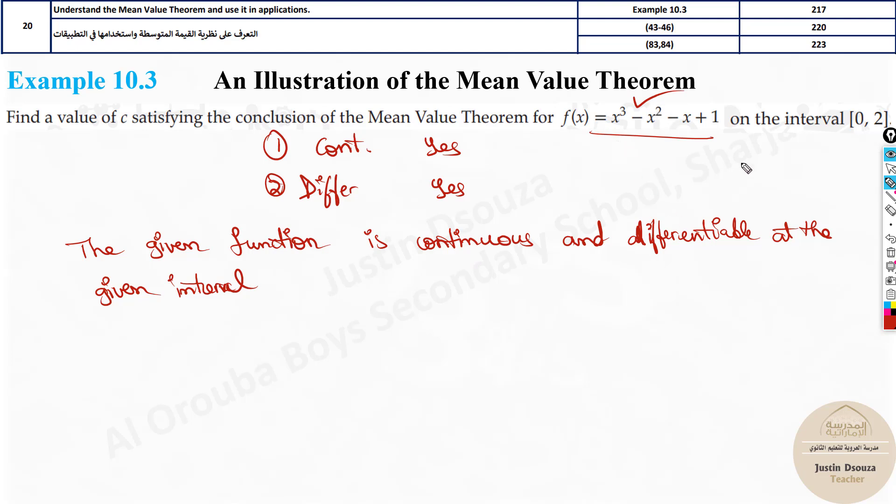For more understanding, this is a polynomial function. And polynomial functions are differentiable throughout all real numbers from minus infinity to plus infinity. So yes, at this point, it is differentiable and continuous. So that's done. Hence, we can use mean value theorem. Okay.